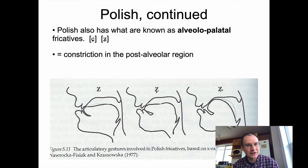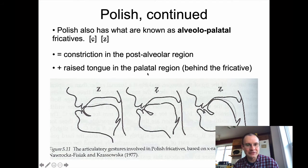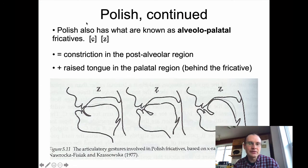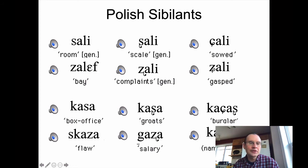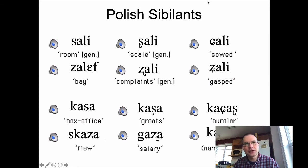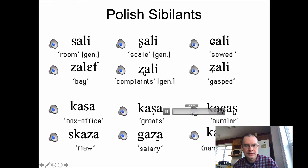The way these alveolopalatal fricatives are transcribed is with a C with a curly Q on the right-hand side for the voiceless version, and a Z symbol with a curly Q for the voiced version. English speakers usually have no problem distinguishing the first two columns from each other, but the second two might be trickier. Because you're making a palatal constriction as you make the fricative, they'll sound like a SH with a yod off-glide — something like 'shali.' Let me play some examples.